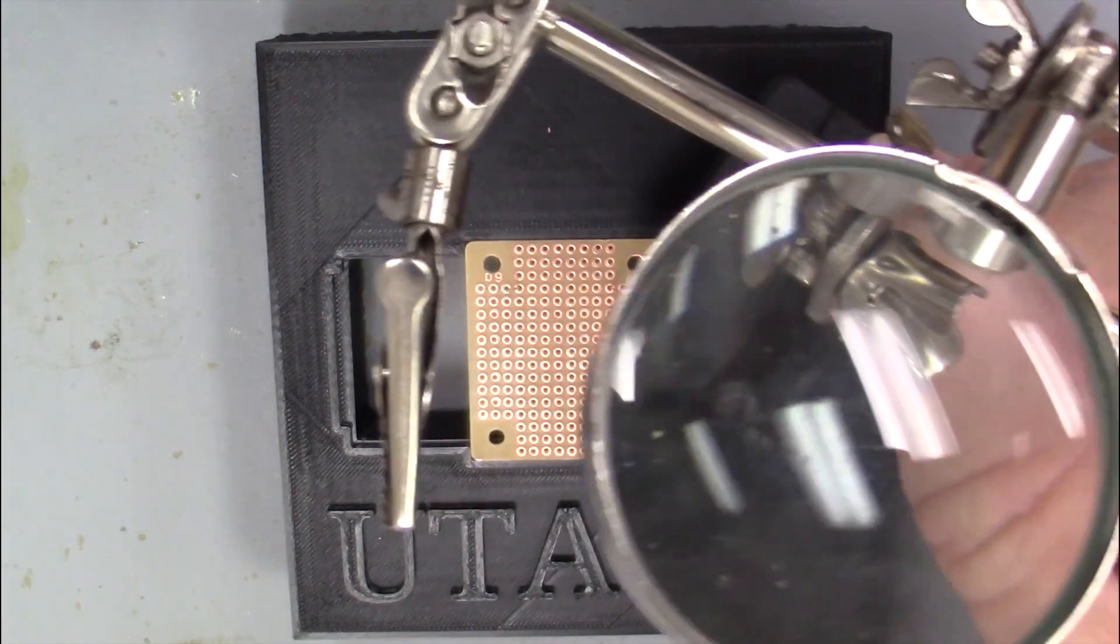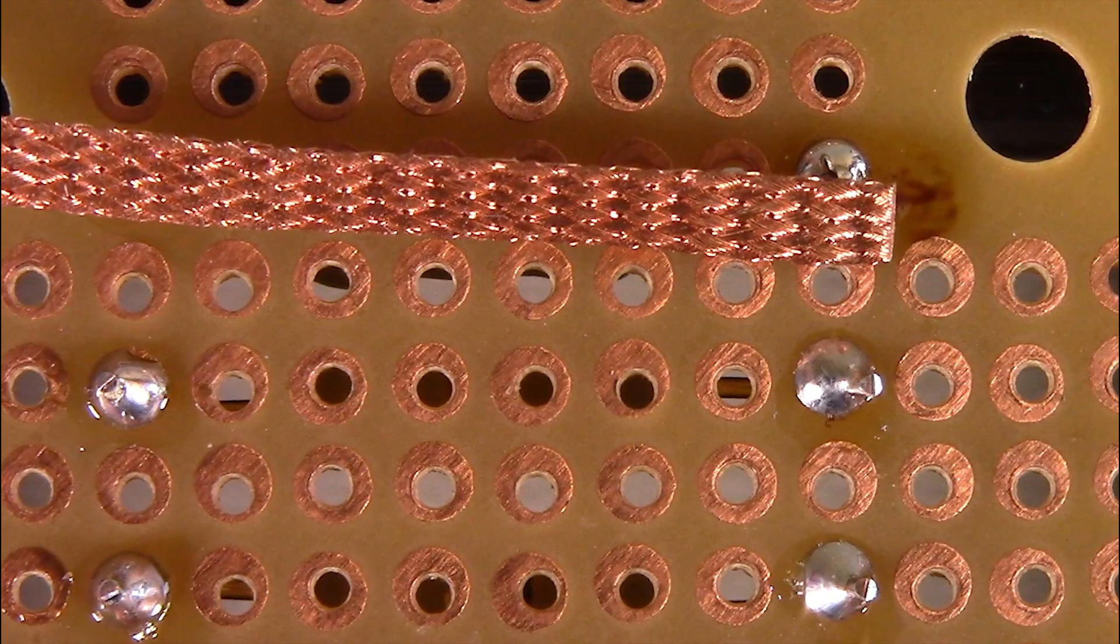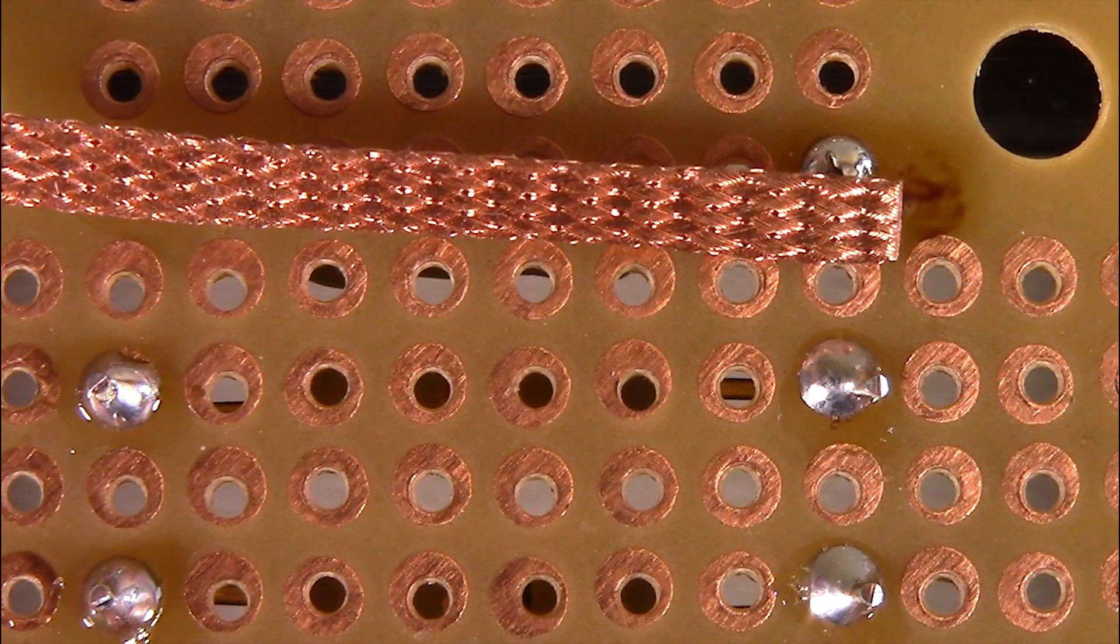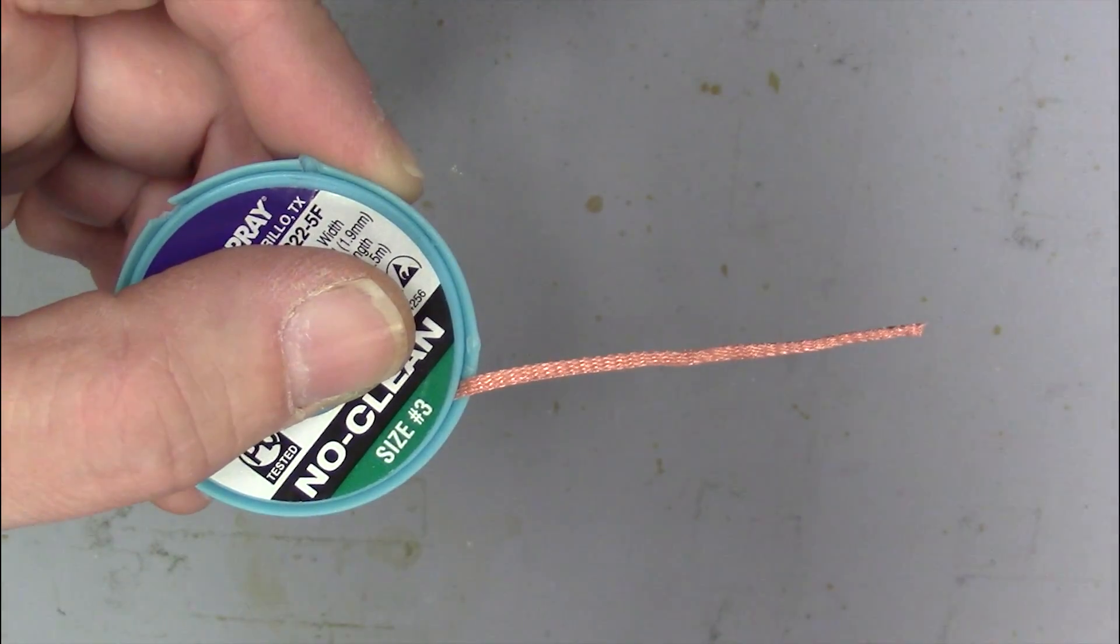Use the helping hands magnifying glass to see better. Place the end of the wick over the solder joint. It's okay to be only on one side of the component lead. Hold the solder wick by the plastic case so you don't burn your fingers.